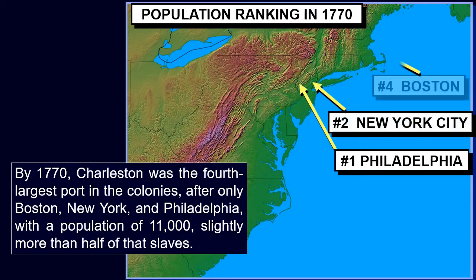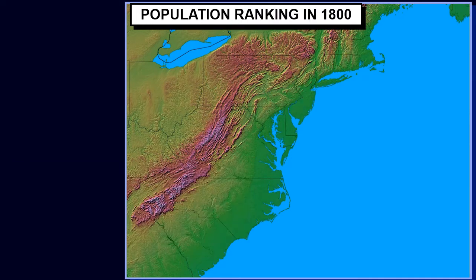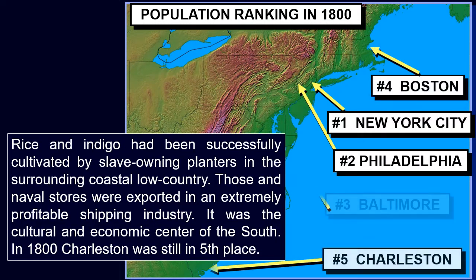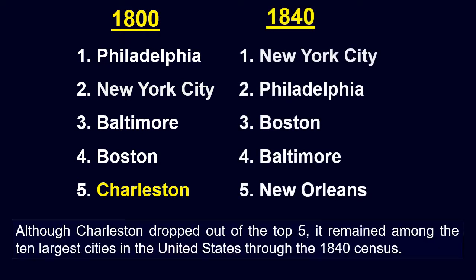By 1770, Charleston was the fourth largest port in the colonies, after only Boston, New York, and Philadelphia, with a population of 11,000, slightly more than half of that slaves. Rice and indigo had been successfully cultivated by slave-owning planters in the surrounding coastal low country. Those in naval stores were exported in an extremely profitable shipping industry. It was the cultural and economic center of the South. In 1800, Charleston was still in fifth place, and though it dropped out of the top five, it remained among the ten largest cities in the United States through the 1840 census.